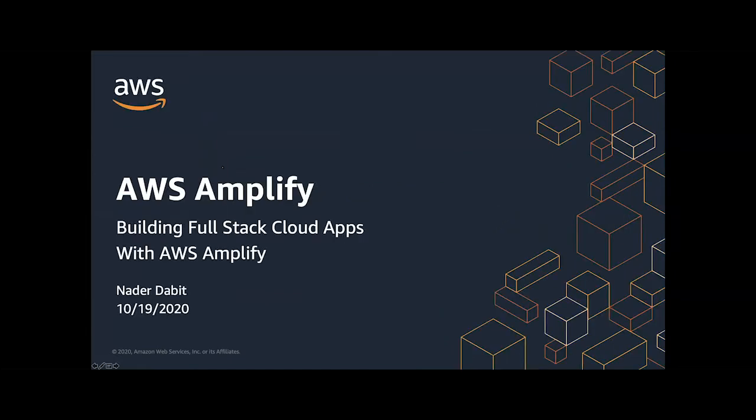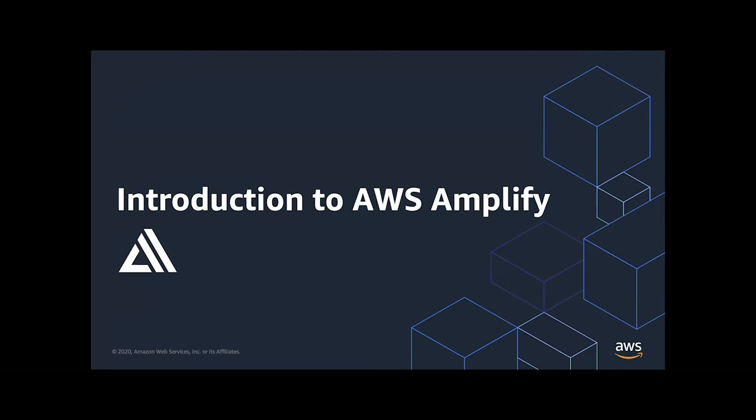My name is Nader Dabit. I'm a senior developer advocate on the AWS mobile team, and I'm also a web and mobile engineer of about nine years at this point. I've been with AWS for a little over two years. This is going to be an introduction to Amplify, which is what we're using to build our workshop with.